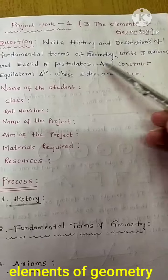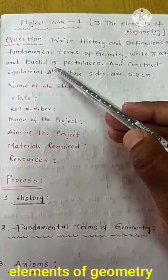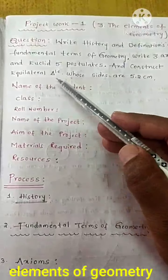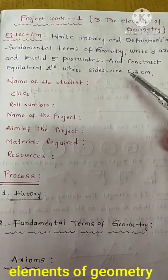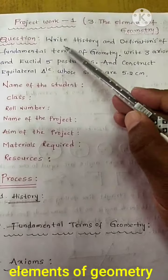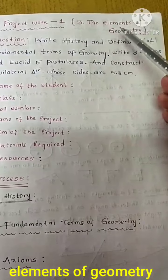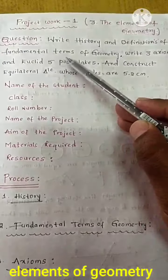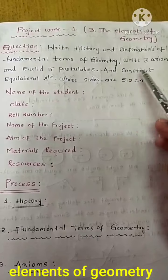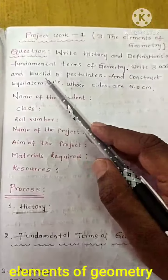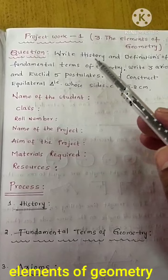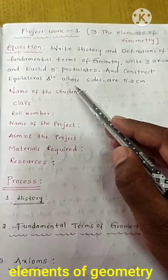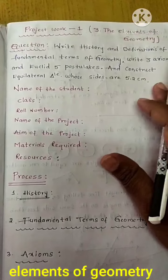Write 3 axioms and Euclid's 5 postulates. These are very very important. And construct an equilateral triangle whose sides are 5.2 cm.